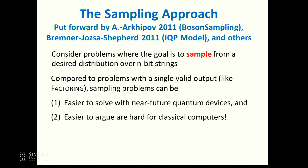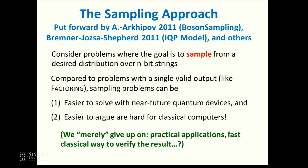I'm not going to go through the arguments about why a fast classical algorithm to solve these exact sampling problems would collapse the polynomial hierarchy, partly because many of you have seen them. The bottom line is we can get evidence that these sampling problems are hard based on very fundamental conjectures in complexity theory. Furthermore, we could hopefully solve these problems with near-future technologies — noisy intermediate-scale, or NISQ, quantum computers, to use John Preskill's term.